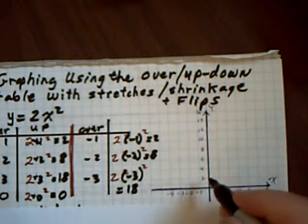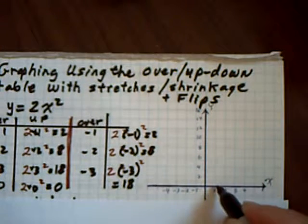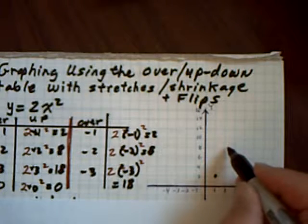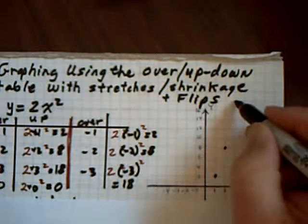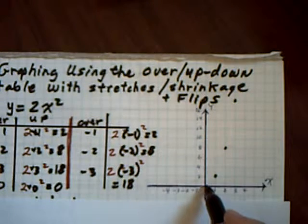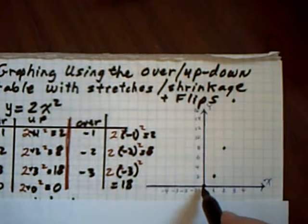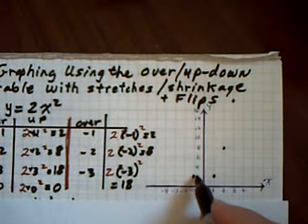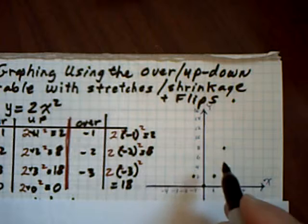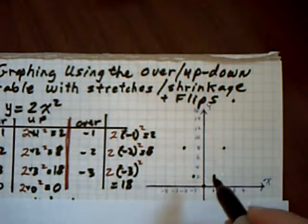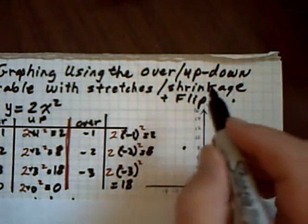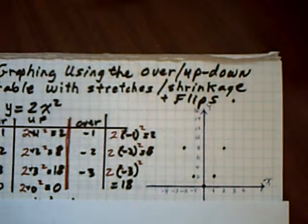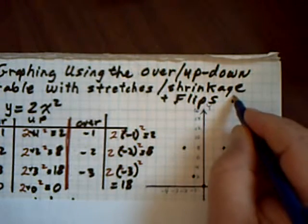And 2 times negative 3 squared is still up 18. So when you actually do the graph: when you go over 1 you go up 2, when you go over 2 you go up 8, when you go over 3 you go up 18 — which is way up here. If I go over 0 I go up 0. If I go to the left 1 I go up 2, go to the left 2 I go up 8, and 2 times negative 3 squared puts me way up here at 18.